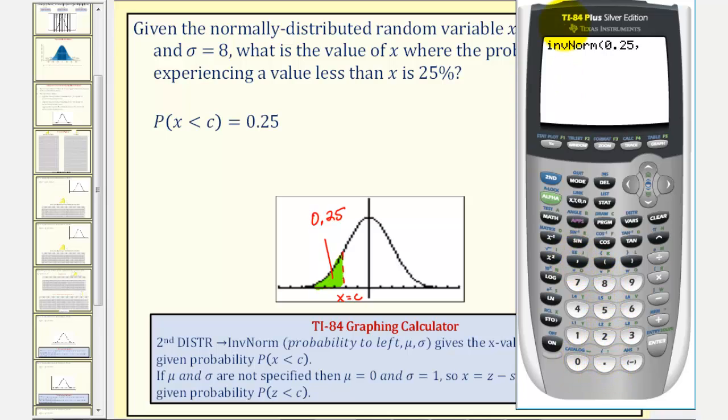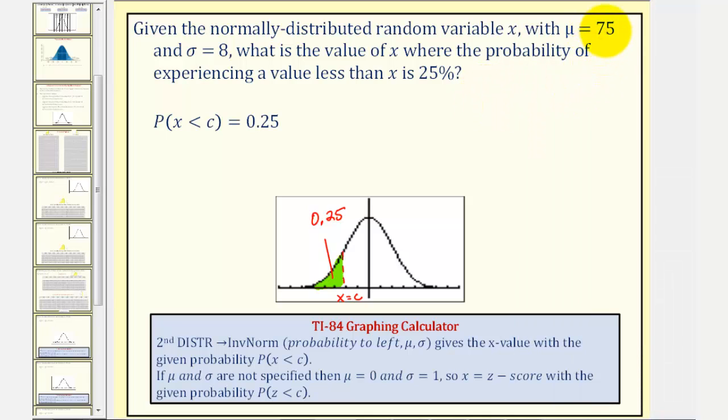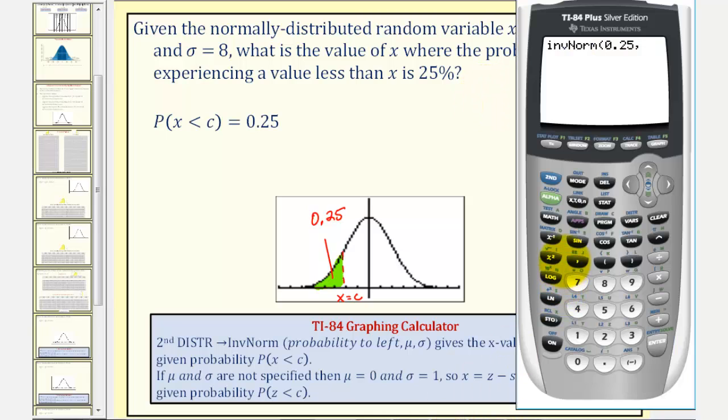Comma, the mean, which was given as 75. Comma, the standard deviation, which is 8. Close parenthesis, enter.